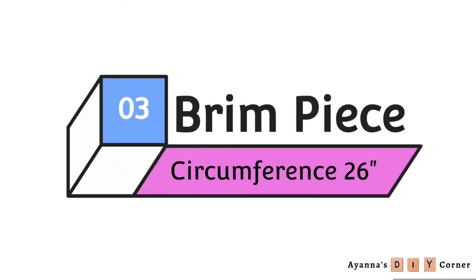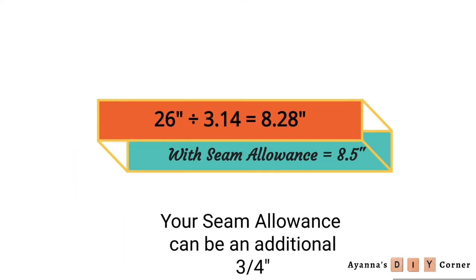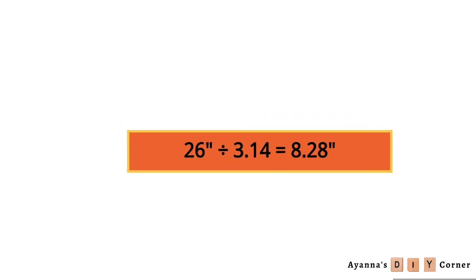Lastly, calculate for the brim piece. Divide your circumference by 3.14. I got 8.28 and made it 8.5 for seam allowance.